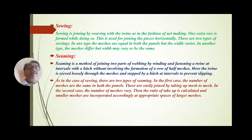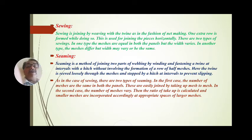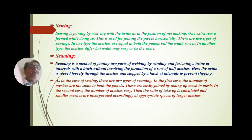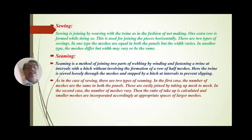There are two types of sieving. In the first case, the number of meshes are the same in both the panels; these are easily joined by taking up mesh to mesh. In the second case, the number of meshes vary; then the ratio of take-up is calculated and smaller meshes are incorporated accordingly at appropriate spaces of the larger mesh.